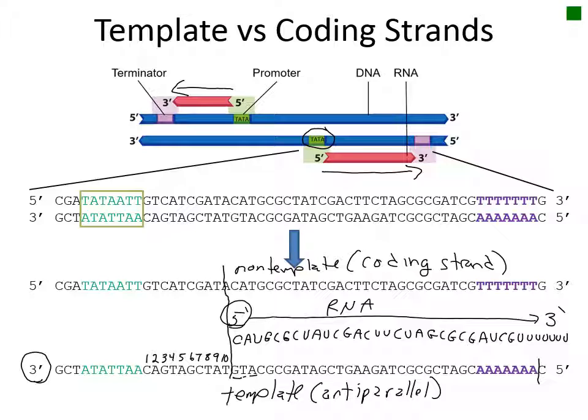When you transcribe DNA, oftentimes it is easier to identify the coding strand, and then just copy the sequence, replacing the thymines with uracil. You will try for yourself in the question on the next slide.